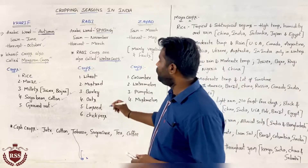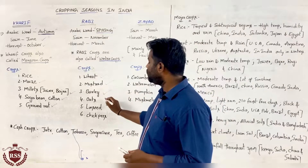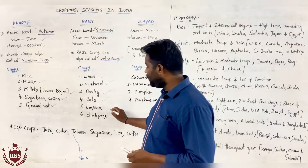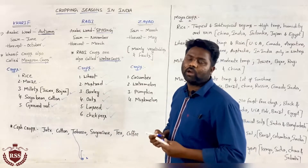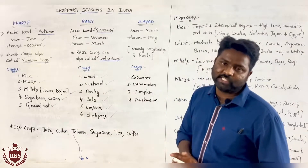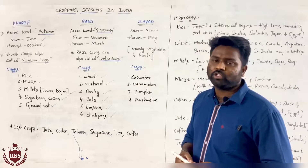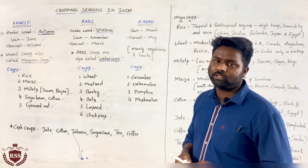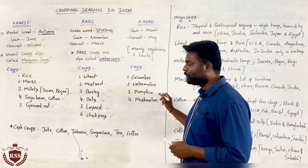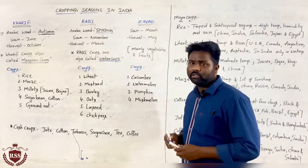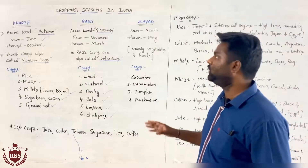Coming to Rabi season crops: wheat, mustard, barley, oats, linseed, and chickpeas — these are all crops harvested in the Rabi season. In Zayad season, as discussed, mostly fruits and vegetables — majorly cucumber, watermelon, pumpkin, and muskmelon — are the crops usually harvested.